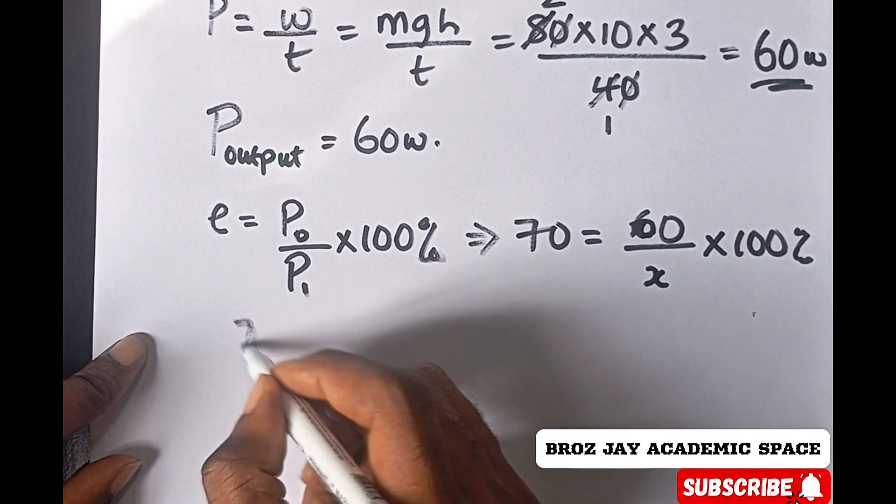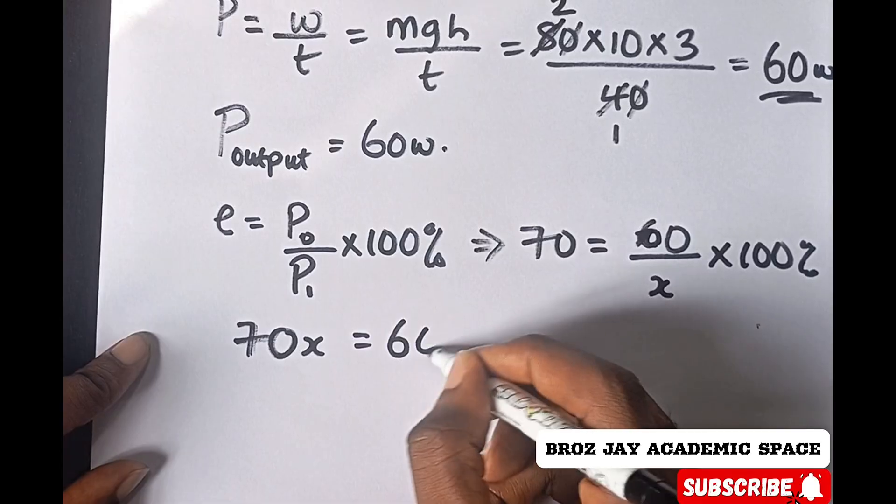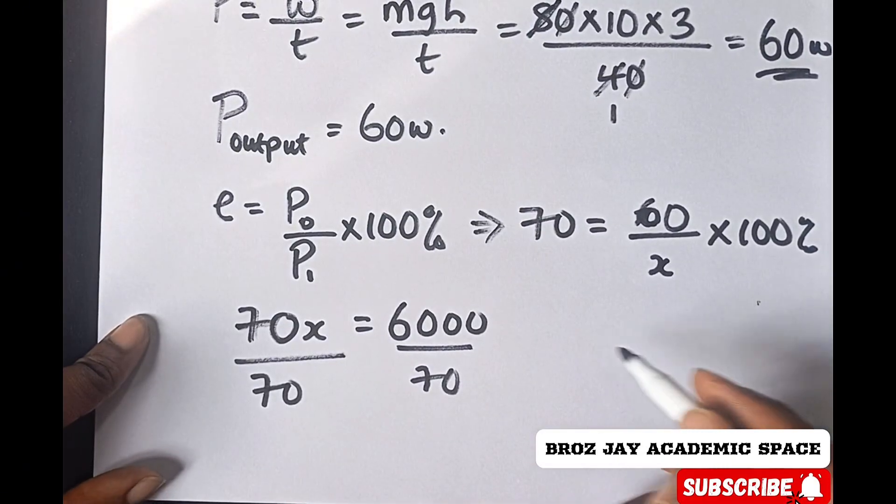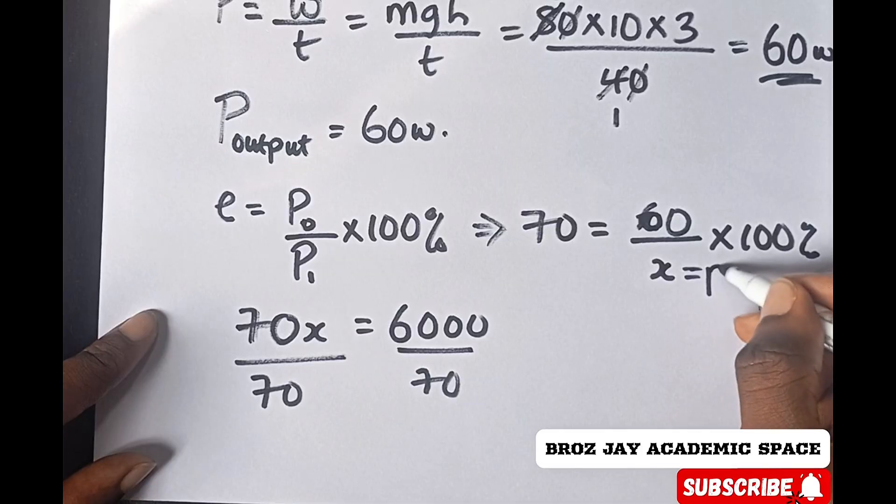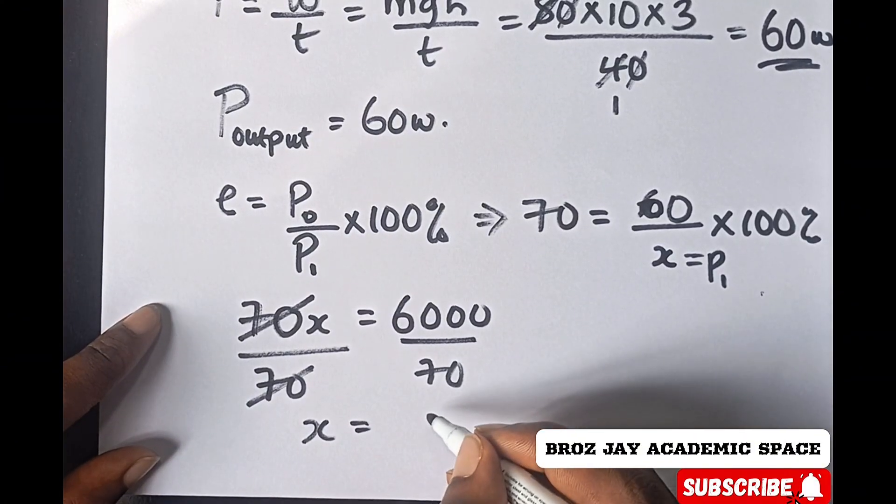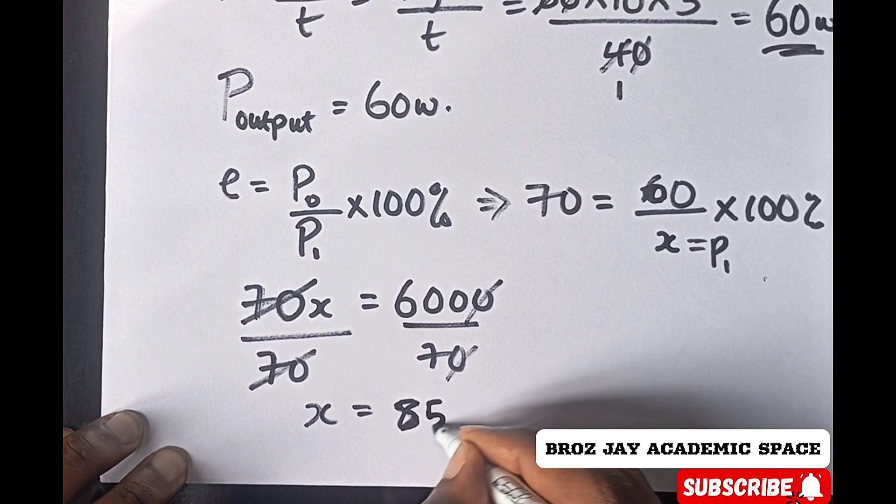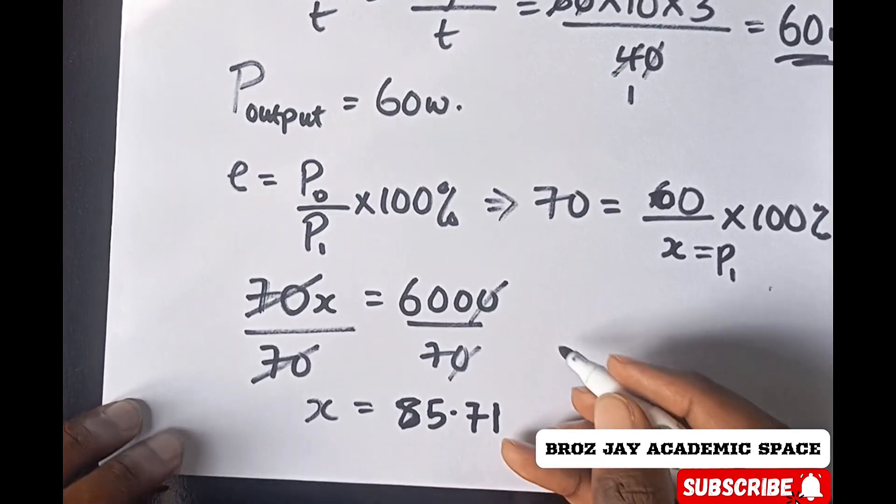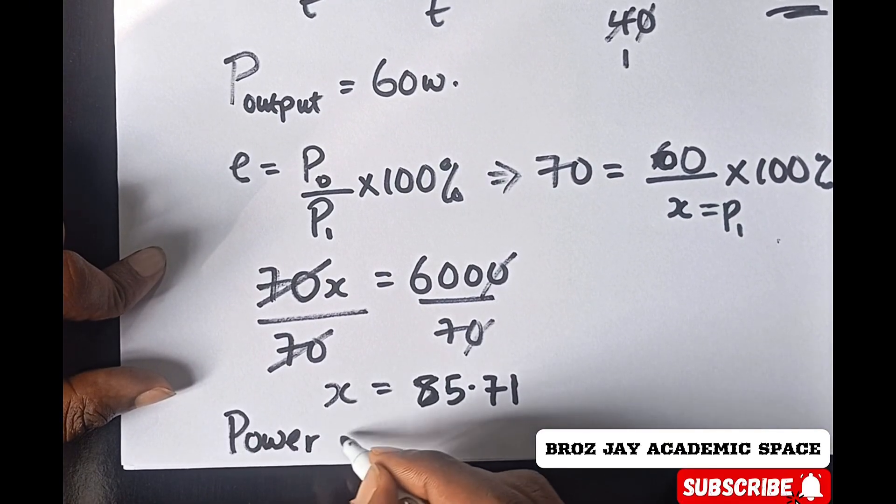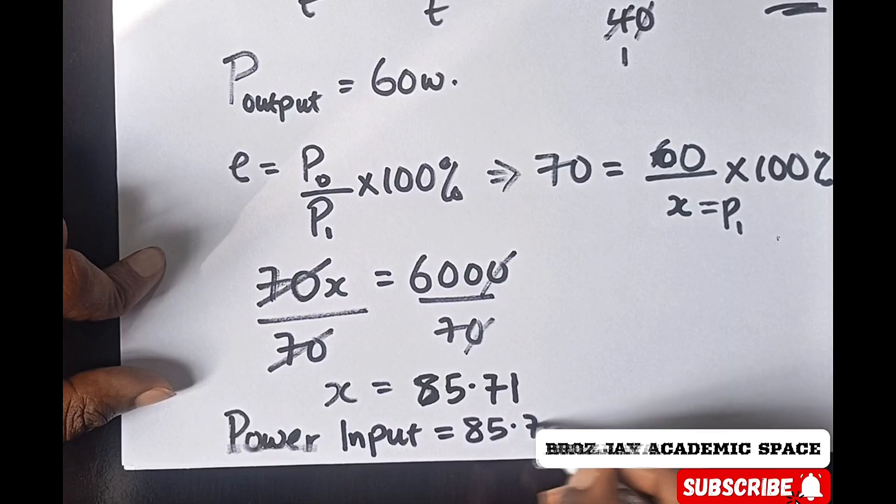Therefore 70x equals 6000 if you multiply that. Divide 70 by both sides to have your x. Recall that x is the same thing as power input. So 70 cancels, my x now equals 6000 divided by 70, which gives 85.71. Therefore power input equals 85.71 watts.